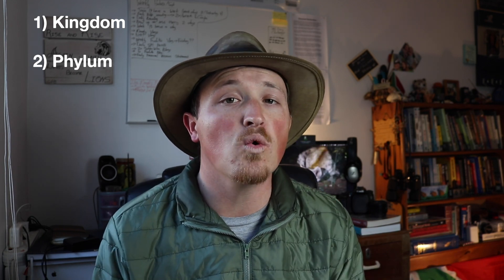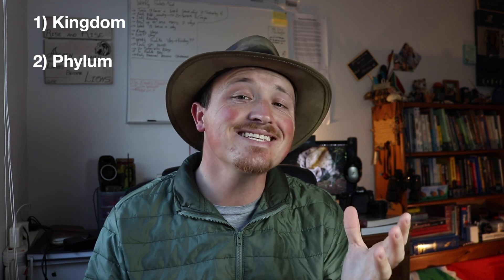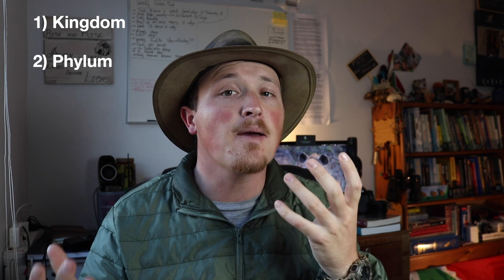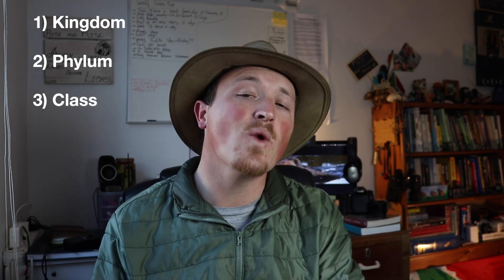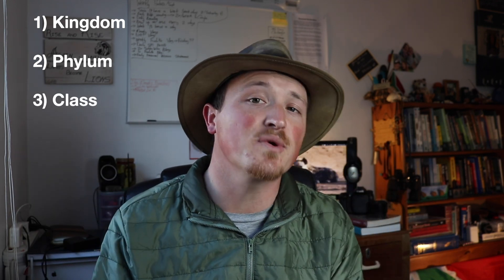It all starts with the kingdom, which includes everything — single-celled organisms, fungi, plants, animals, everything. Then you get phylum, which refers to the actual structure of the organism. For example, insects are called arthropods because of their exoskeleton, and mammals are termed chordates because they have a spinal cord. Then you get class, where animals with similar traits are grouped together, like amphibians, reptiles, and mammals.